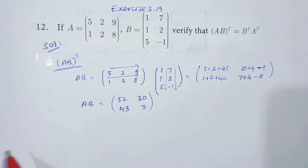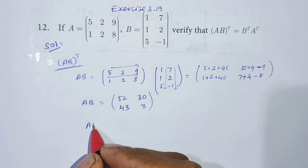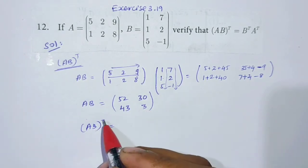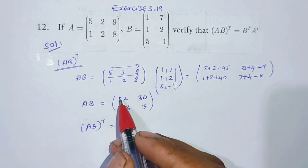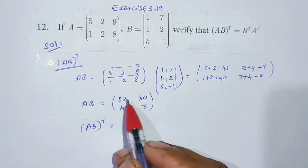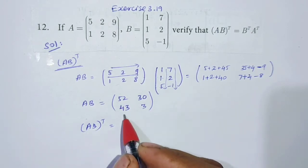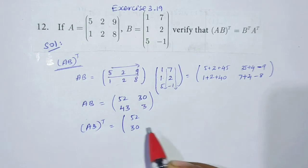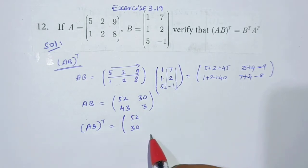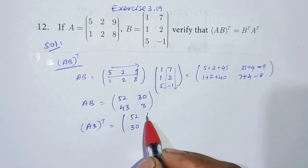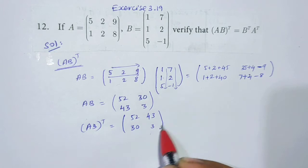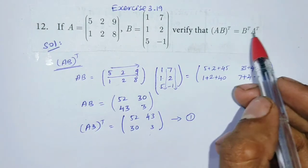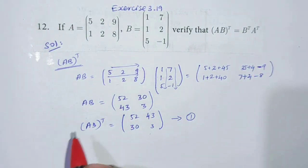AB whole transpose — apply transpose. Row becomes column: row [52, 30] becomes column [52, 30]. Second row, second column: 43, 3. So (AB)ᵀ equals [52, 43; 30, 3]. This is equation number 1.